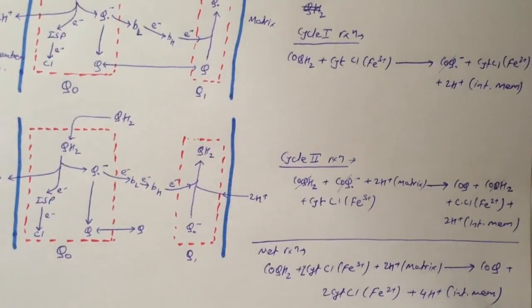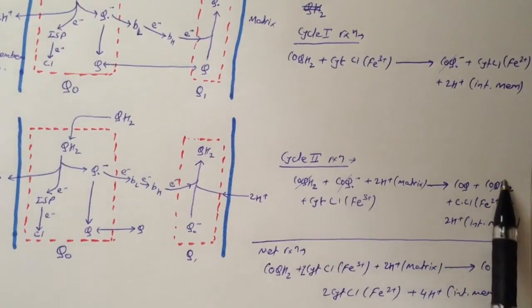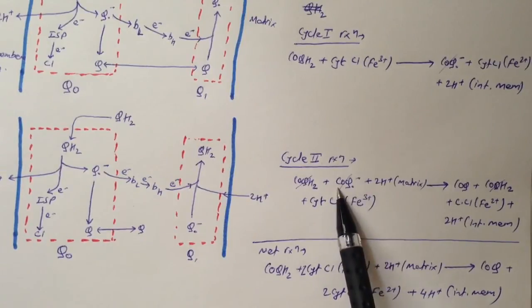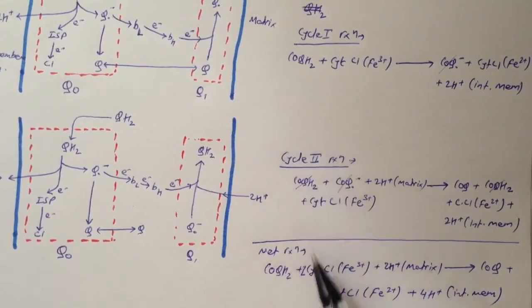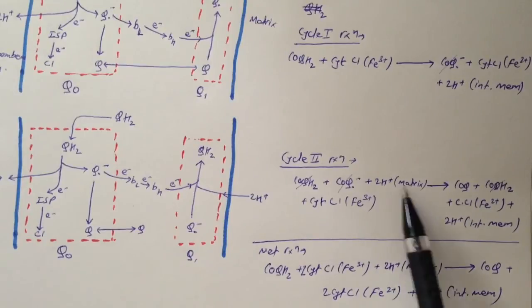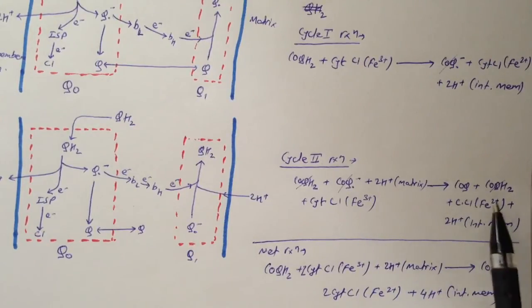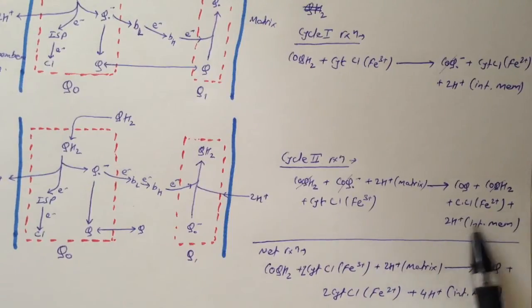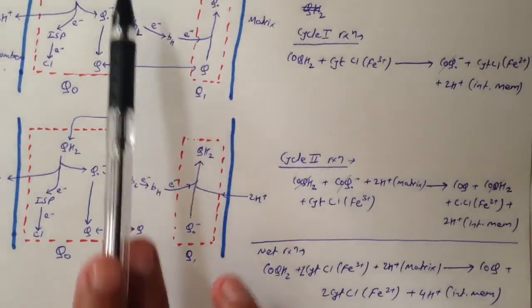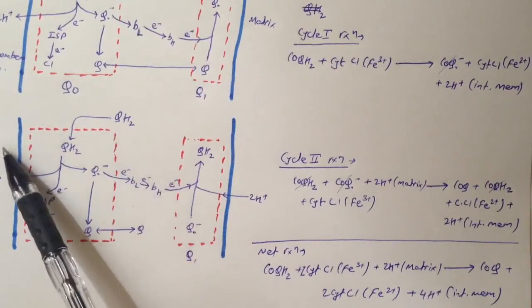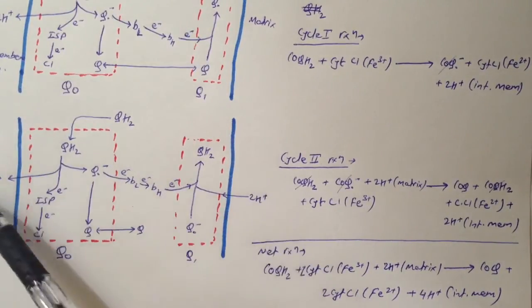Combining the net reactions of cycle I and cycle II: the QH₂ and Q•⁻ terms on each side cancel. The overall net reaction is: one QH₂ + 2 cytochrome c1(Fe³⁺) + 2 H⁺ (matrix) → one Q + 2 cytochrome c1(Fe²⁺) + 4 H⁺ (intermembrane space). So by the end of the Q cycle, 2 H⁺ from QH₂ and 2 H⁺ from the matrix are pumped to the intermembrane space.